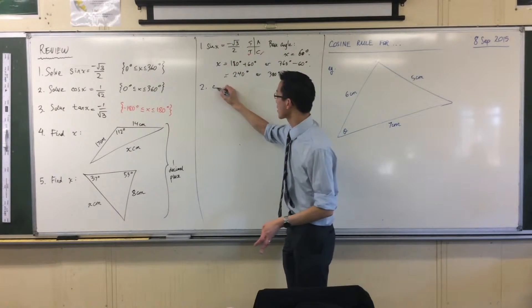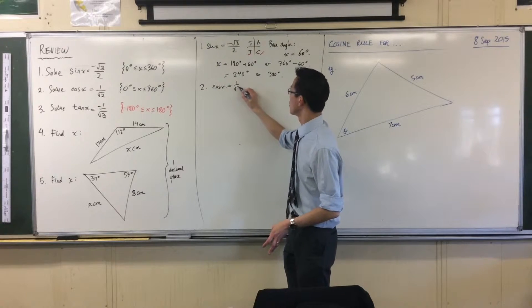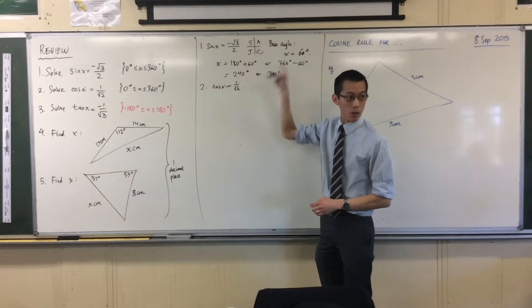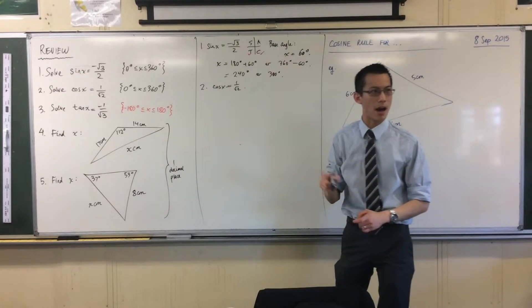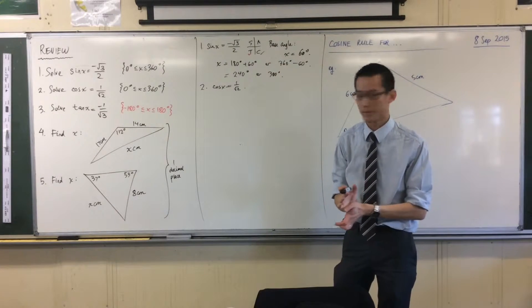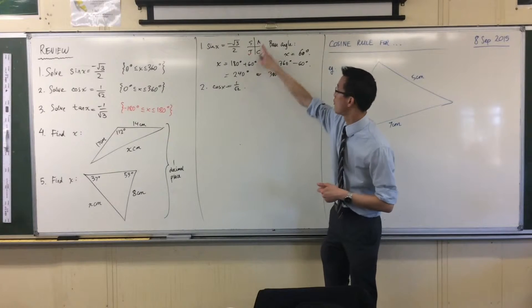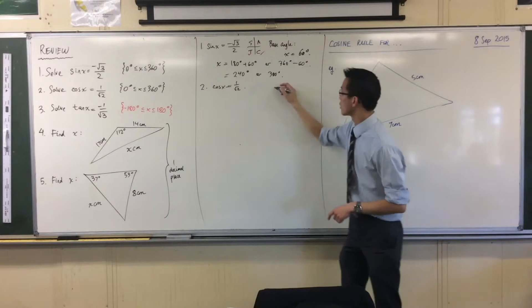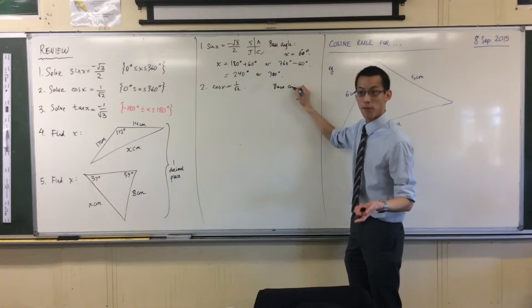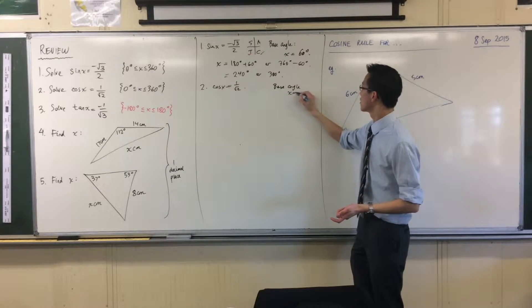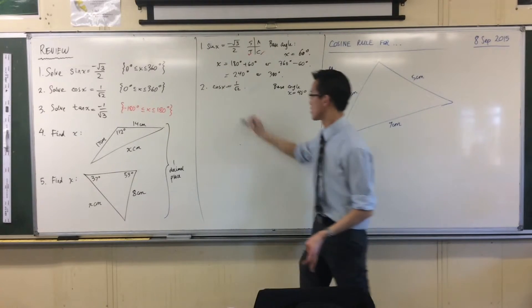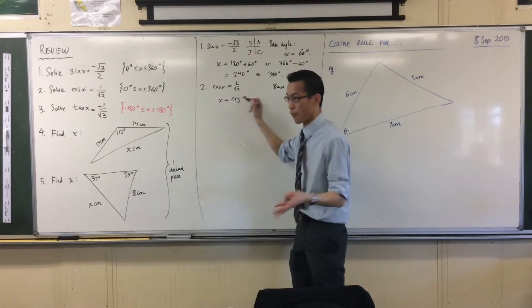Again, quickly: cos x equals 1 on root 2. This is kind of handy because when I look back at my quadrants, which quadrants am I after for this one? It's positive, right? First and fourth. What's the base angle that goes with this guy? It's going to be 45 degrees.